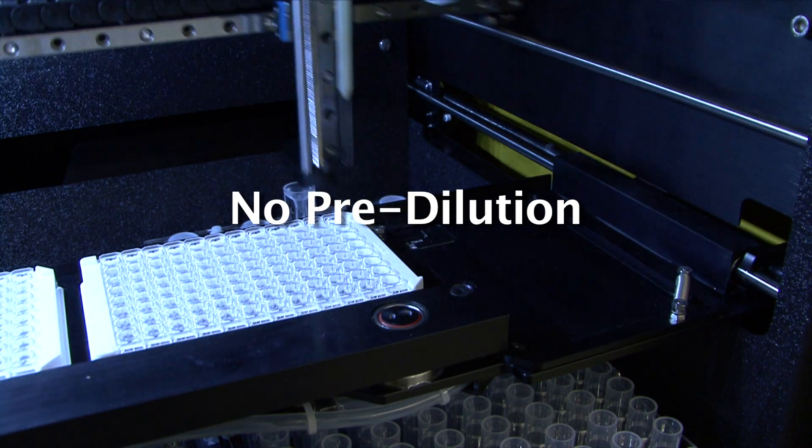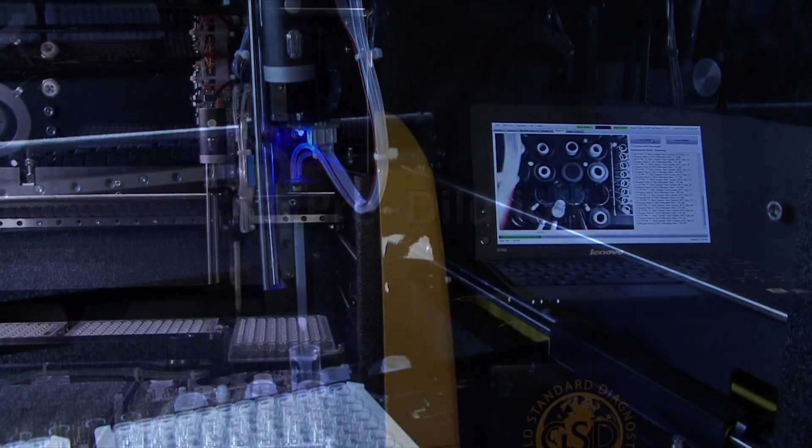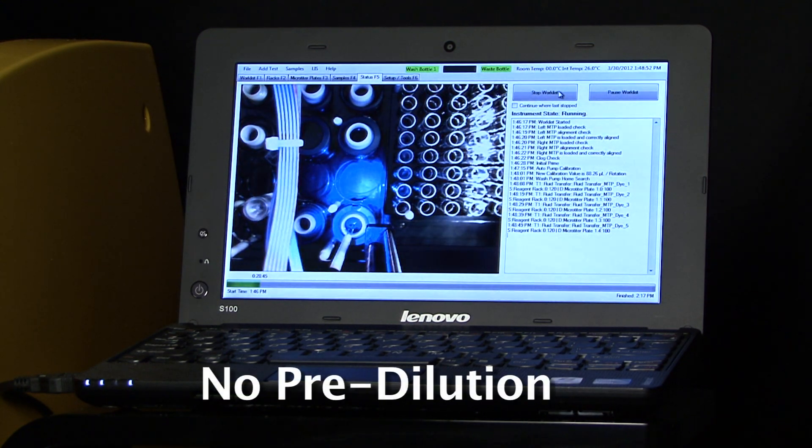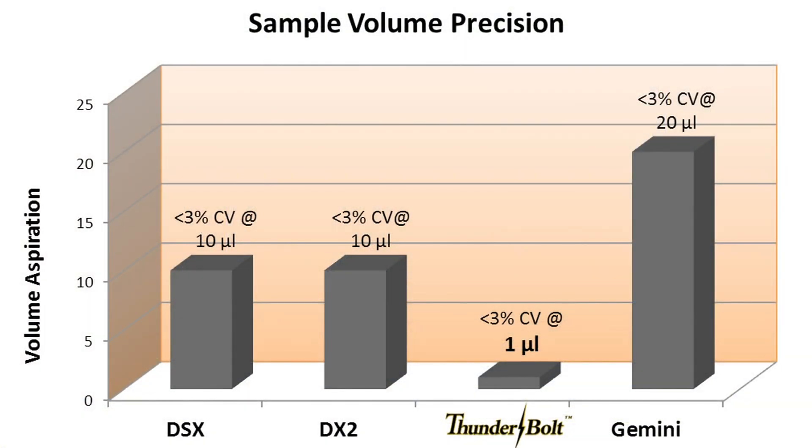No pre-dilution. The Thunderbolt aspirates 1 microliter with less than 3% CV, eliminating pre-dilution processing steps. Compared to competitors, the Thunderbolt maintains the same level of precision at much lower volumes.